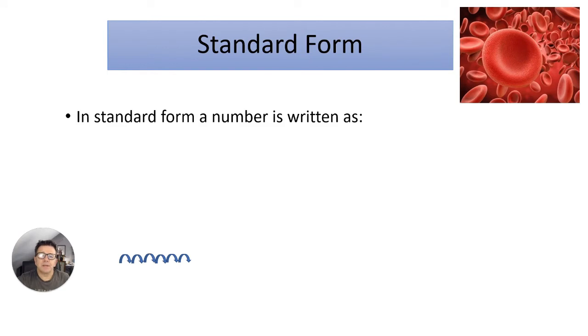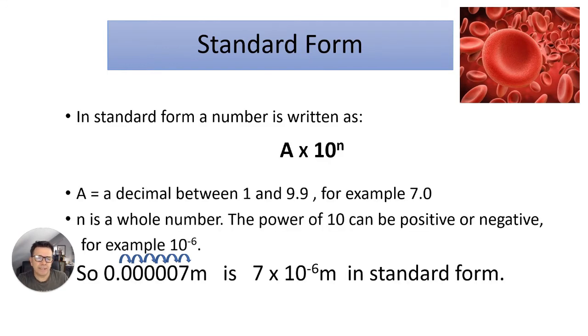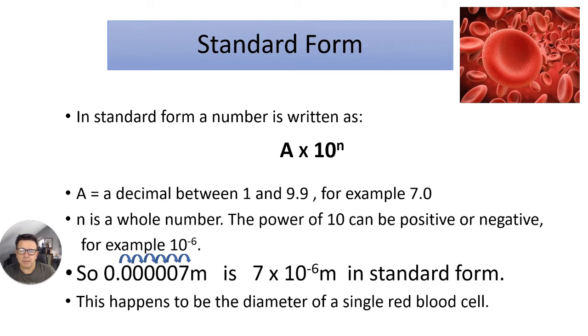In standard form a number is written as A times 10 to the N. A is a decimal between 1 and 9.9, for example 7.0. N is a whole number and the power of 10 can be positive or negative. Here we have an example of 7 times 10 to the minus 6. So 0 point and count the arrows 1, 2, 3, 4, 5, 6 to make it 7 times 10 to the minus 6 in standard form. That happens to be the diameter of a red blood cell.